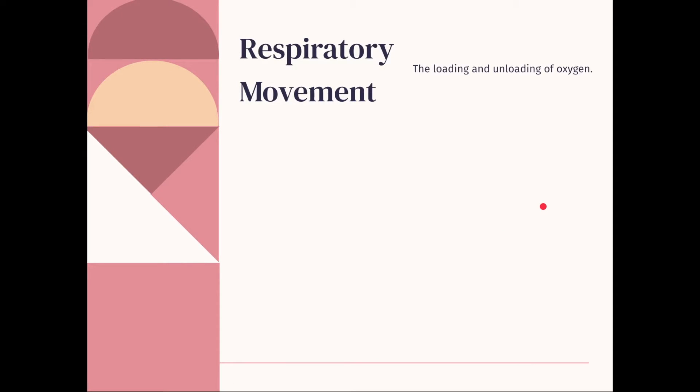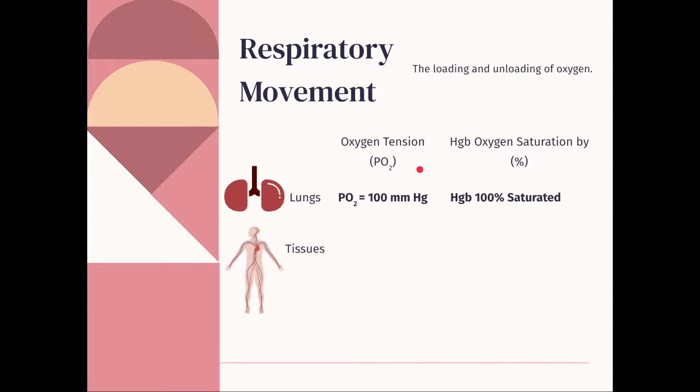And so that whole loading and unloading of oxygen is called the respiratory movement. So in your lungs, the PO2 or the oxygen tension, which just represents how much oxygen there is in certain areas, it's measured at 100 millimeters mercury in your lungs. And in your lungs, hemoglobin saturation, so how much oxygen is in your hemoglobin, it's at 100%. And that makes sense. So 100, 100.